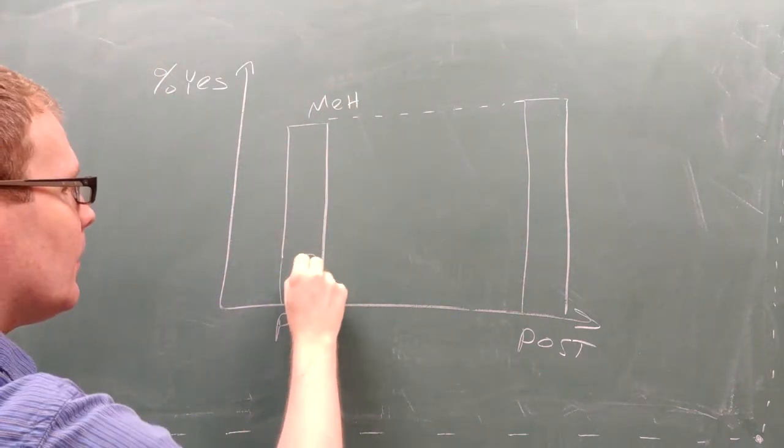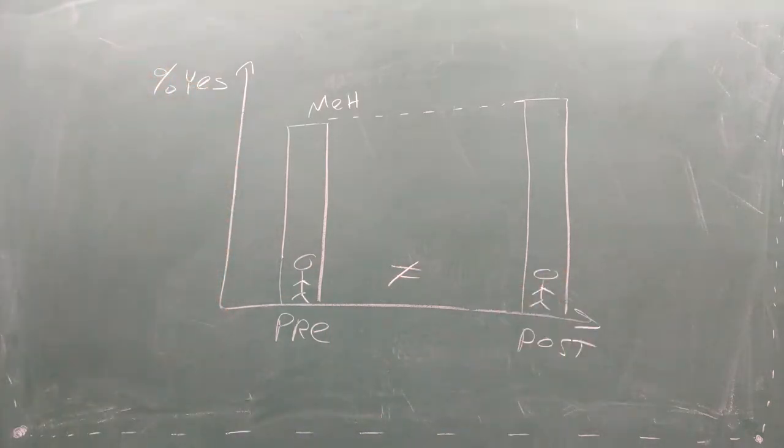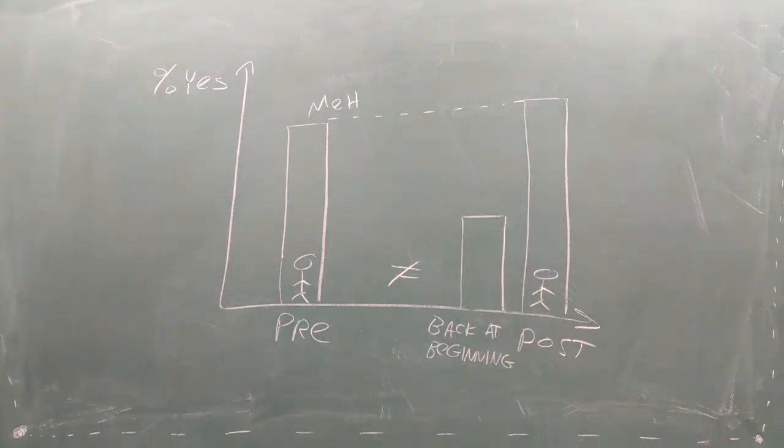Essentially, the student who takes the survey at the end of the semester isn't the same student as the one who took the survey at the beginning of the semester. If instead we ask the end of semester students what their responses would have been at the beginning of the semester, we see incredibly high gains.